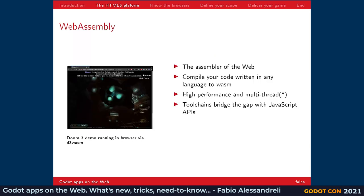Then the new thing: WebAssembly. The idea is to have an assembler of the web, something that is easy to interpret and execute, with simple instructions. You can write your code in any compiled programming language you like, and then compile it to WebAssembly as a target platform for compilers. The idea is that we bring high performances and a multi-threaded environment to the web. Tool chains bridge the gap between what WebAssembly can do and the JavaScript APIs.